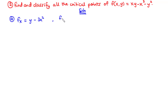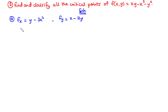Next, we find fy. We differentiate y and get 1, so 1 times x gives us x. The x cubed term goes to zero. We differentiate negative y squared and that becomes negative 2y. So fy equals x minus 2y. The next thing is we are going to set each of them to zero.